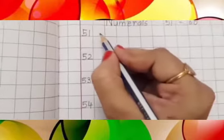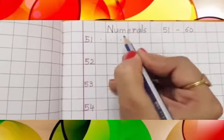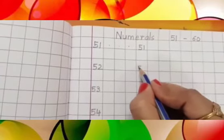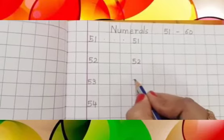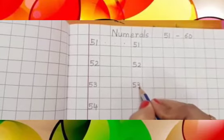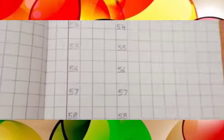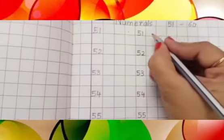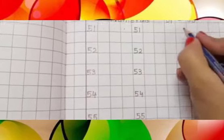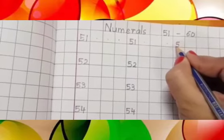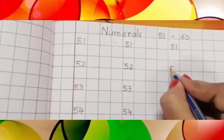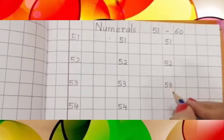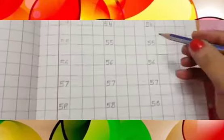Now what we will do? We will leave 1, 2, 3 boxes here and again write the same numerals: 51, leave one box, 52, same way 53 — same procedure, we will write till 60. Understood, kids? Now what we will do? We will leave 3 boxes here again and write down the same numerals one more time: 51, 52, 53 — same way, we will complete till 60.